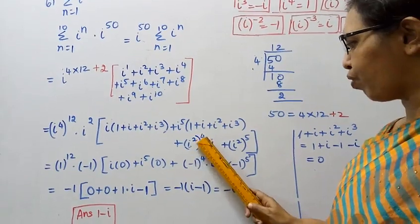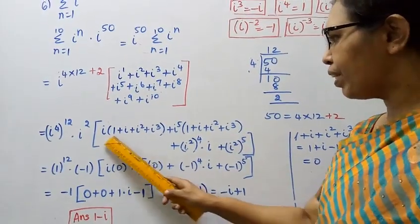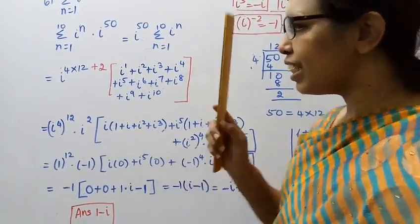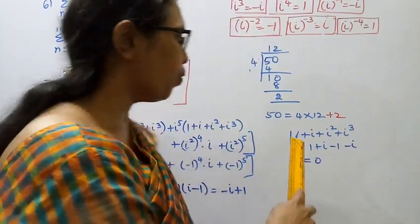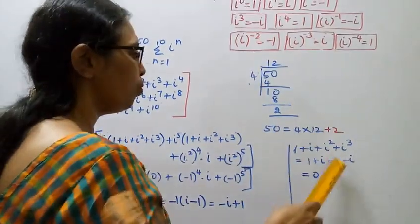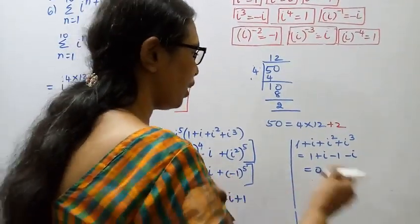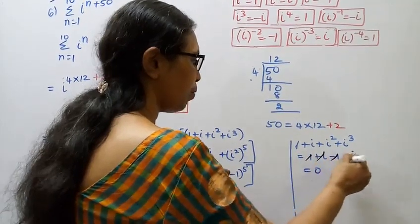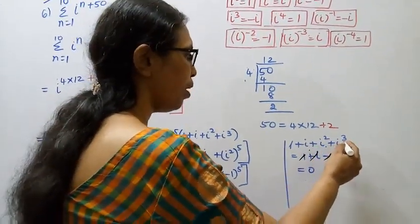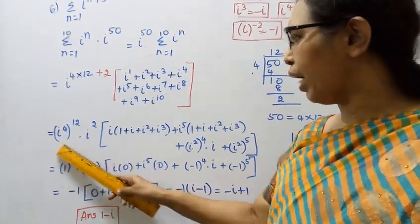i square the whole power 4 into i, plus i square the whole power 5. If you know the values already, contribute zero. 1 plus i plus i square plus i cube equals zero. 1 plus i, i square value minus 1, i cube value minus i, plus 1 minus 1 cancel, plus i minus i cancel, equals zero. So 1 plus i plus i square plus i cube value is zero.